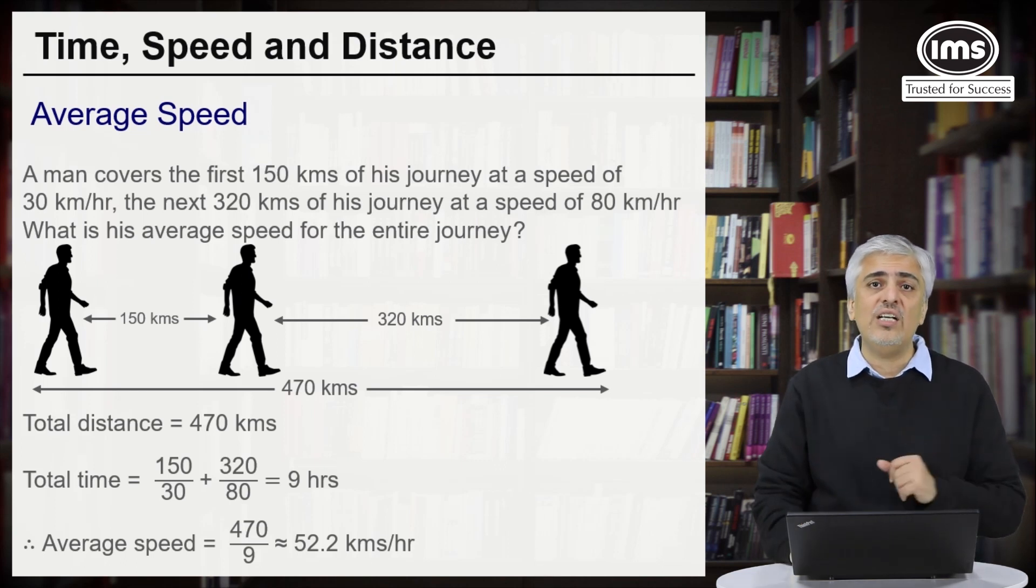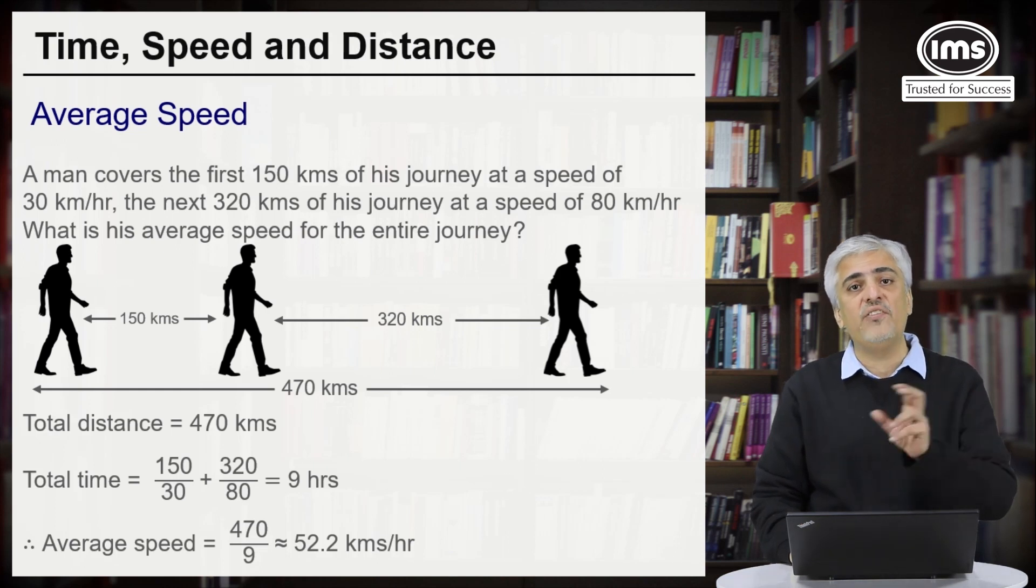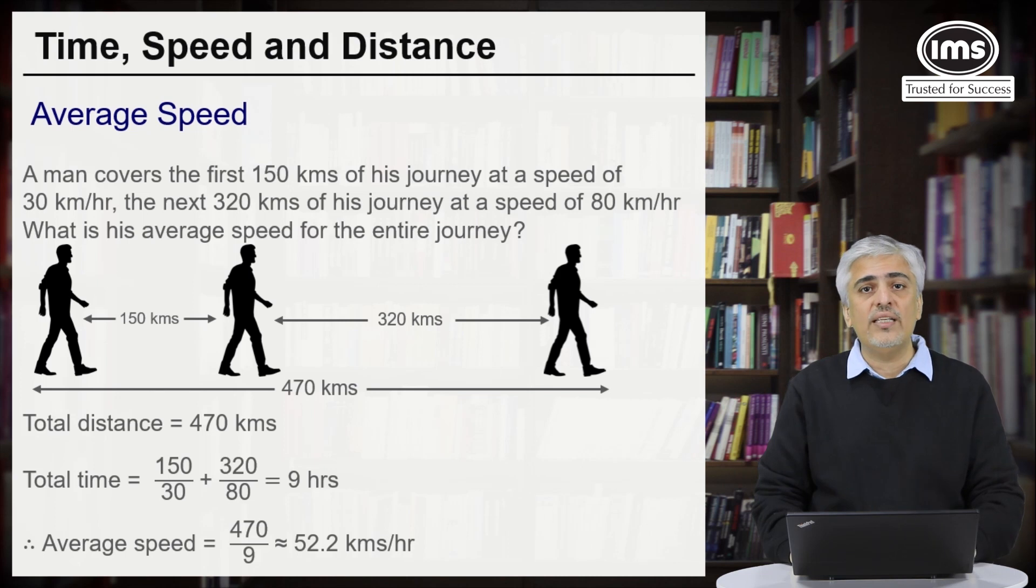So now that was the first kind of average speed example where we saw that a person is travelling different distances at different speeds. Let's look at the next example.